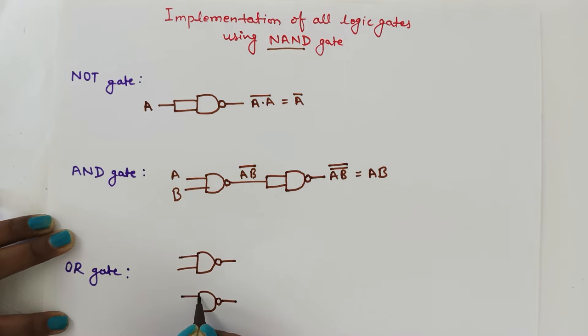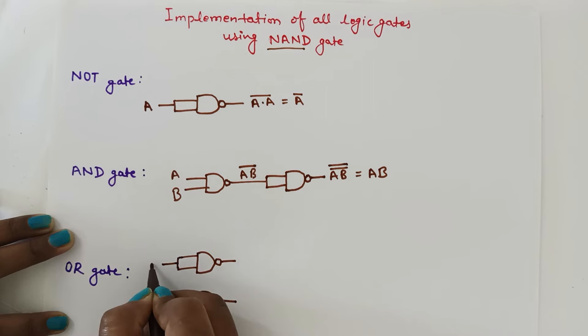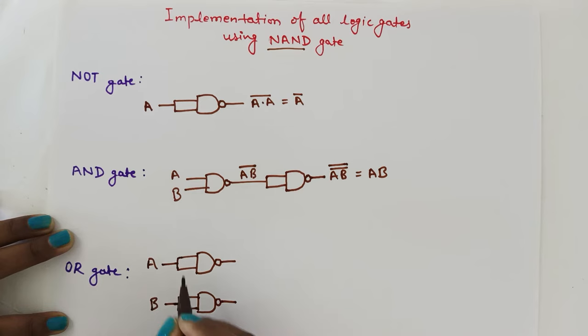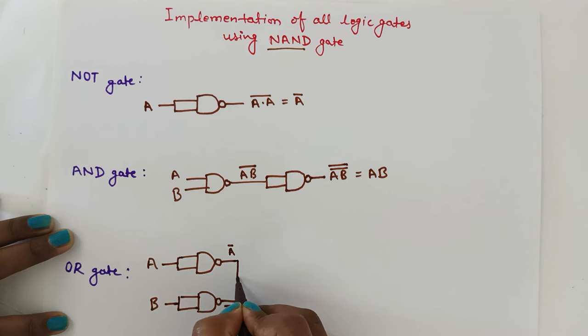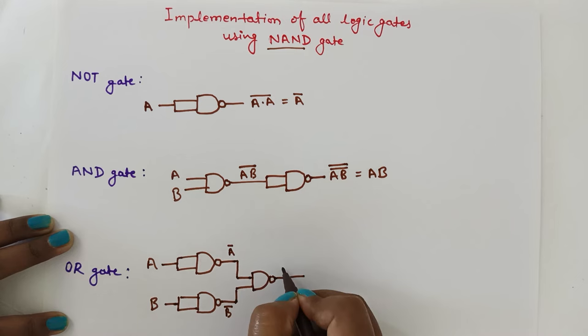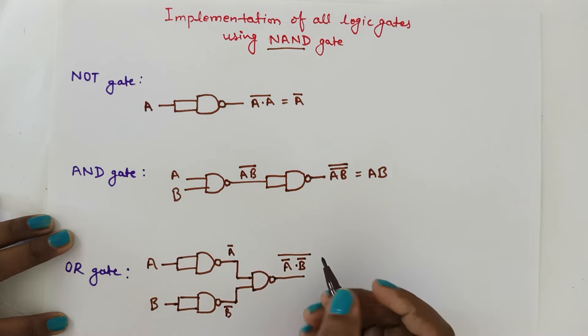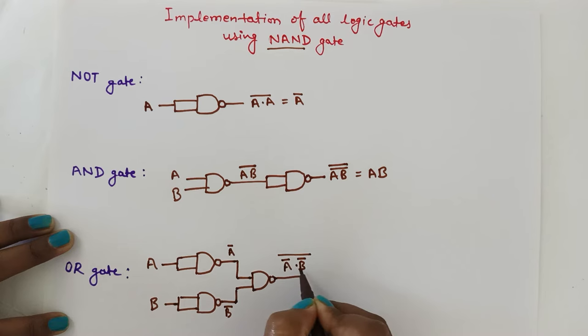Now move to OR gate. Take two NAND gates and give both inputs as A to the first, and both inputs as B to the second. This acts as an inverter, giving A bar and B bar respectively. Give these outputs as inputs to a third NAND gate.